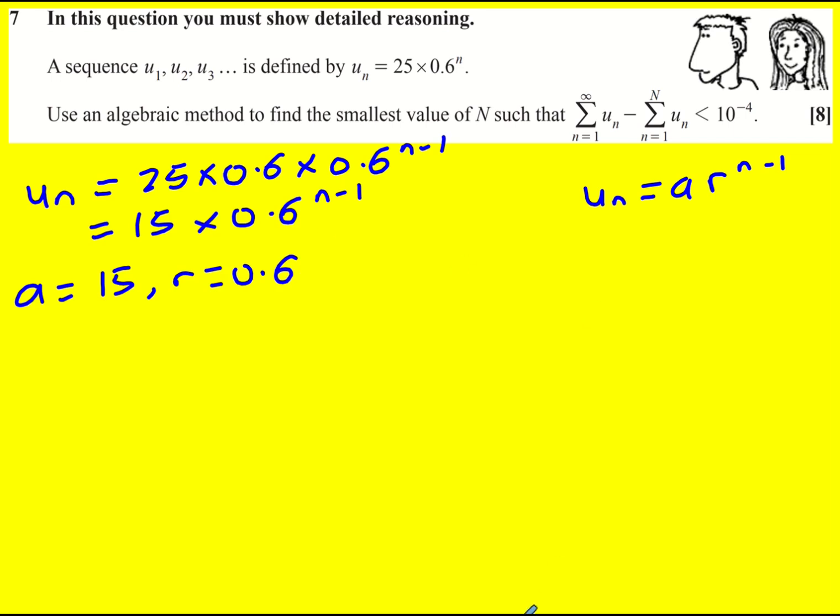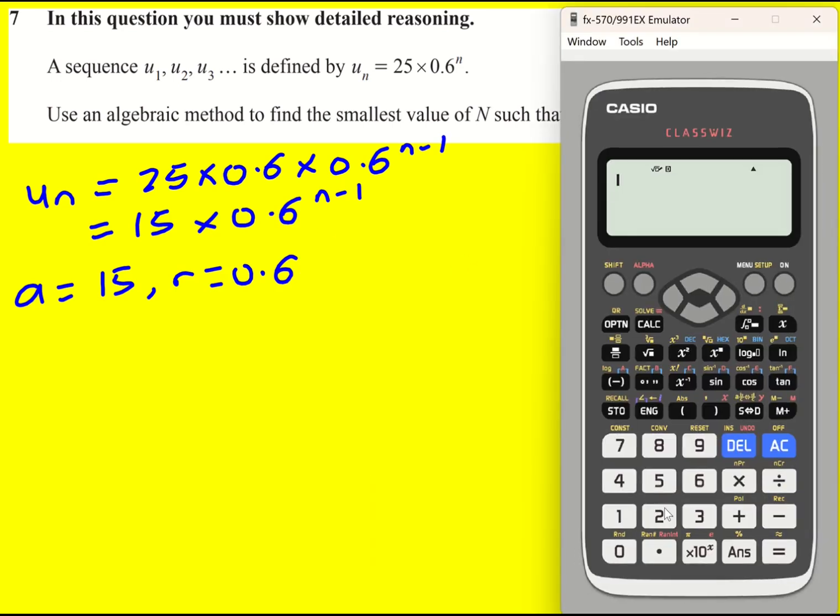If you're not happy with that, then you can just write out the first few terms. 25 times 0.6 for when n is one gives 15, times by 0.6 again to give 9. You could write 15, 9, and 5.4.